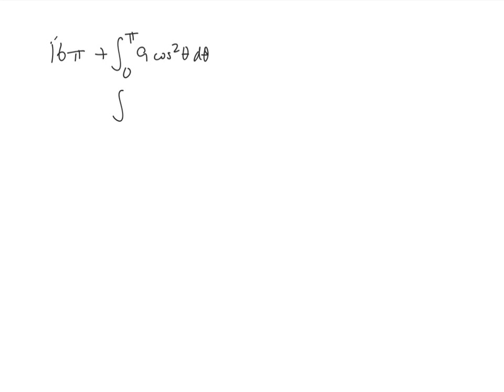So that's 0 to π, 9 times the quantity one-half times 1 plus cosine of 2 theta. We'll take that 9 and that one-half and pull that out so we've got nine-halves times the integral from 0 to π of 1 plus cosine 2 theta d theta.